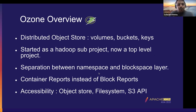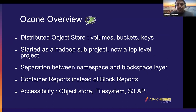So what is Ozone basically? Ozone is a distributed object store. Its namespace comprises of volumes, buckets, and keys. Like an S3, it has the concept of buckets and keys, but Ozone also has an extra entity called the volume. Ozone started as a Hadoop sub-project and sometime back it became a top-level project.